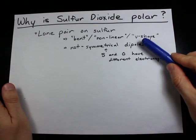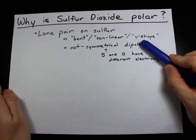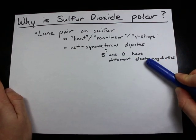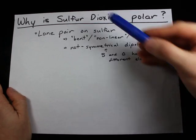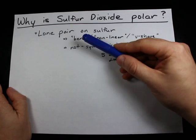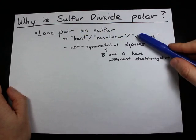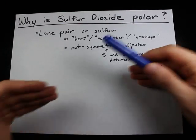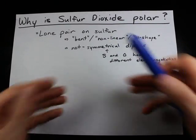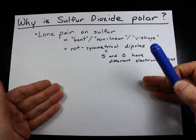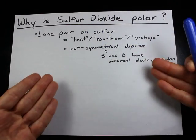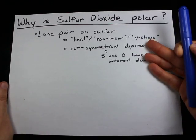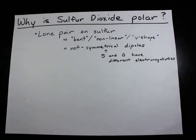The dipoles themselves are caused by the fact that sulfur and oxygen have different electronegativities. So even though ozone, which has the exact same molecular geometry, is non-polar — that's because the three oxygen atoms in ozone have the same electronegativity, so there are no bond dipoles to make the molecule polar.